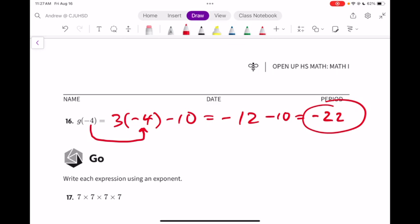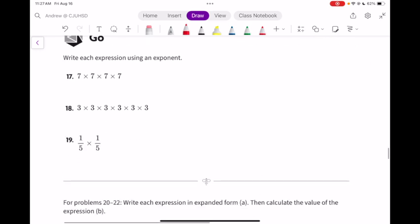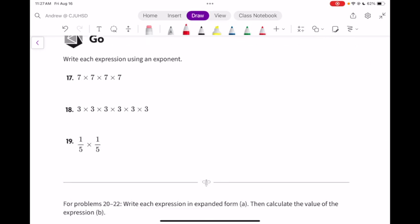Now we're on to the Go part. The Go helps us with our next lesson. This is a review of exponents. So if we want to write 7 multiplied times itself 4 times, that's written as 7 to the 4th power. The 4 is up in the air. If the 7 is on the ground, the 4 is up in the air.